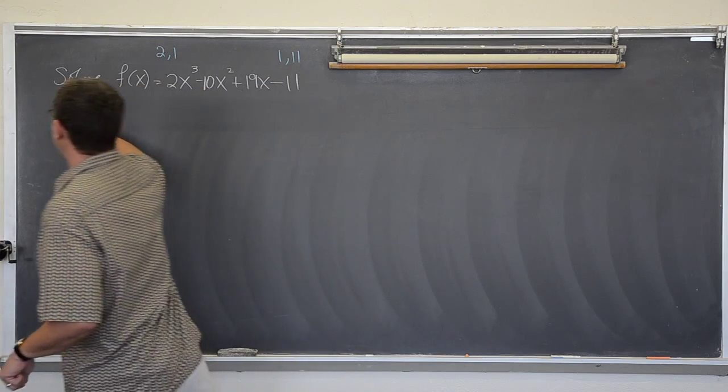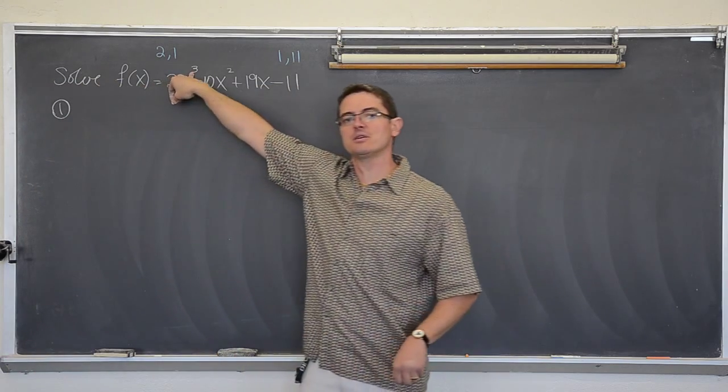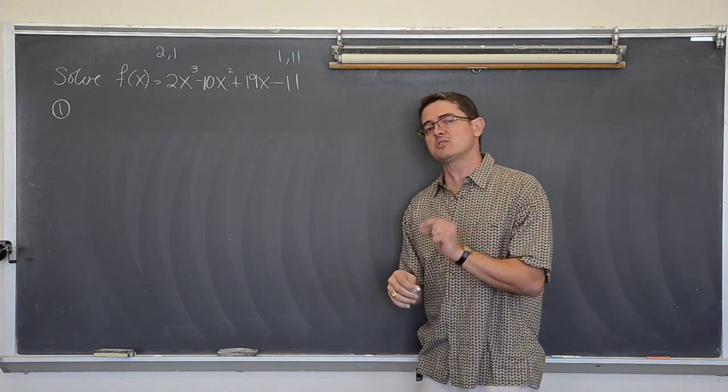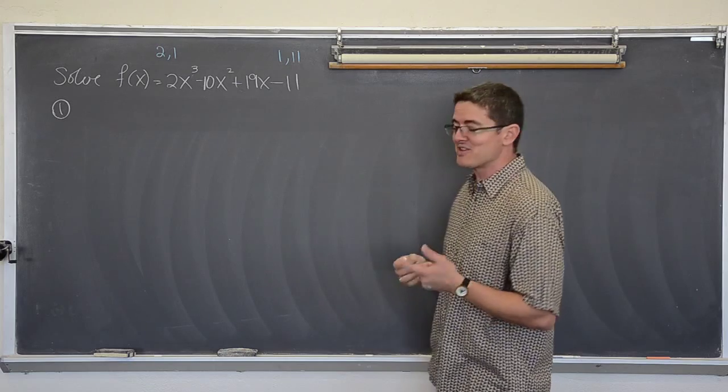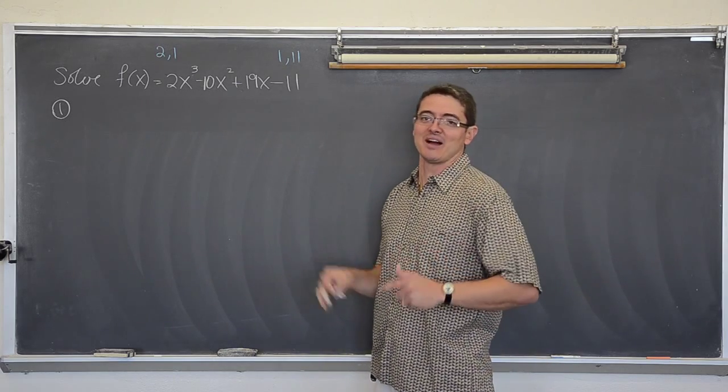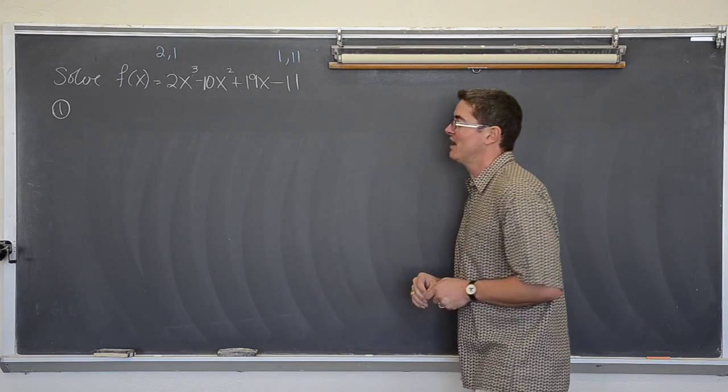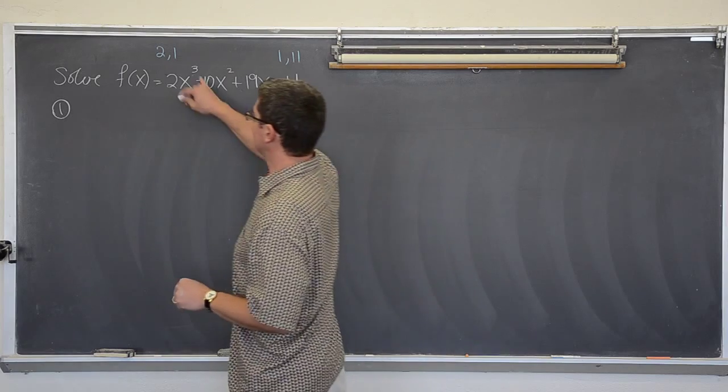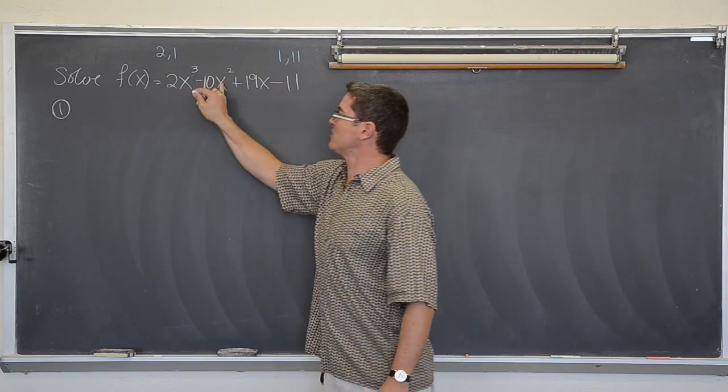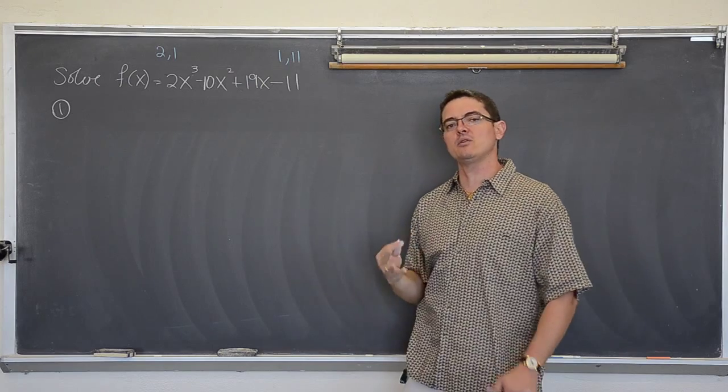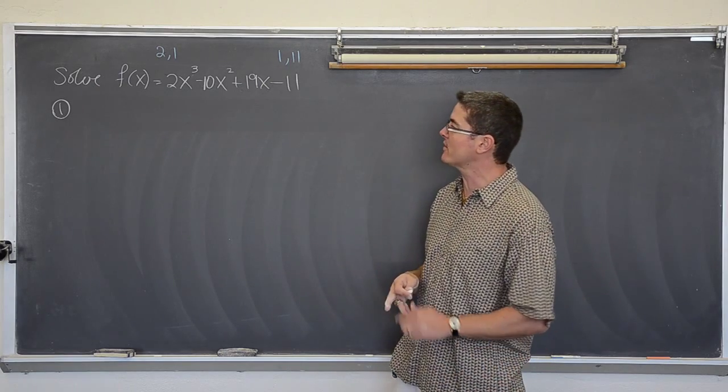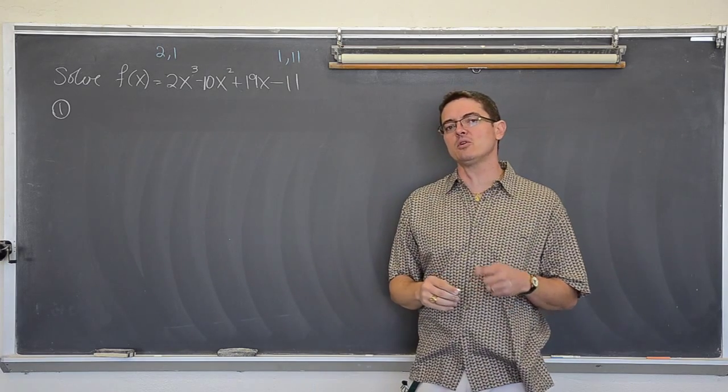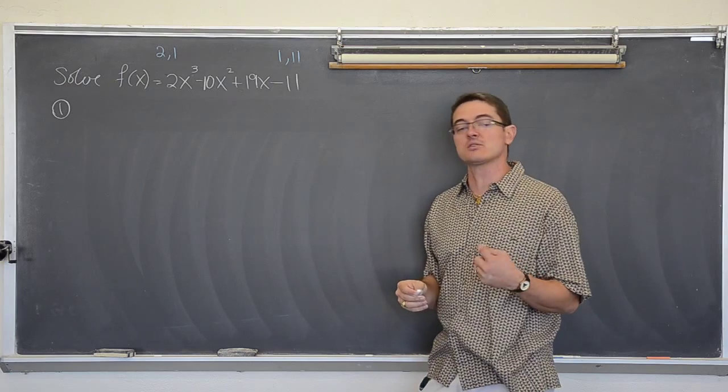Let's start with step 1. When you are given an equation with an exponent higher than 2, you are going to need to solve that. It might factor by grouping, but there's a good chance it is not. The first step is to list all the possible rational zeros with the rational zero theorem.